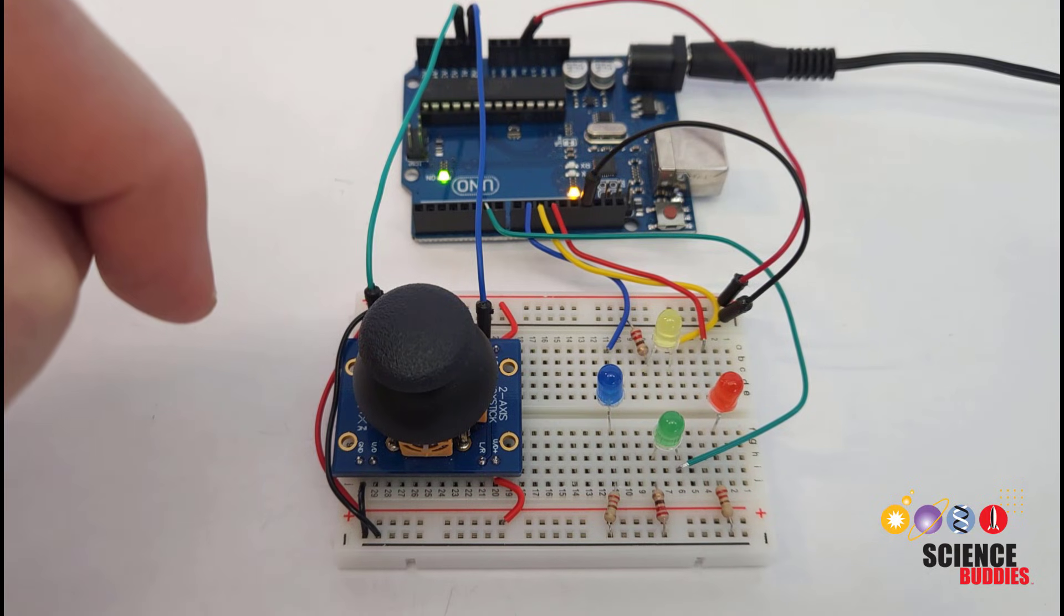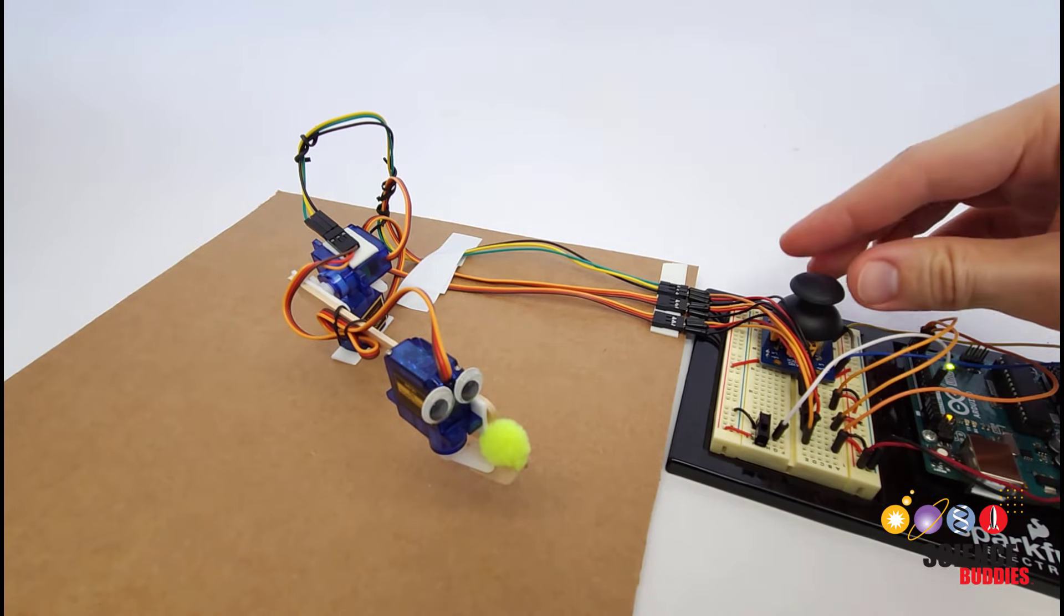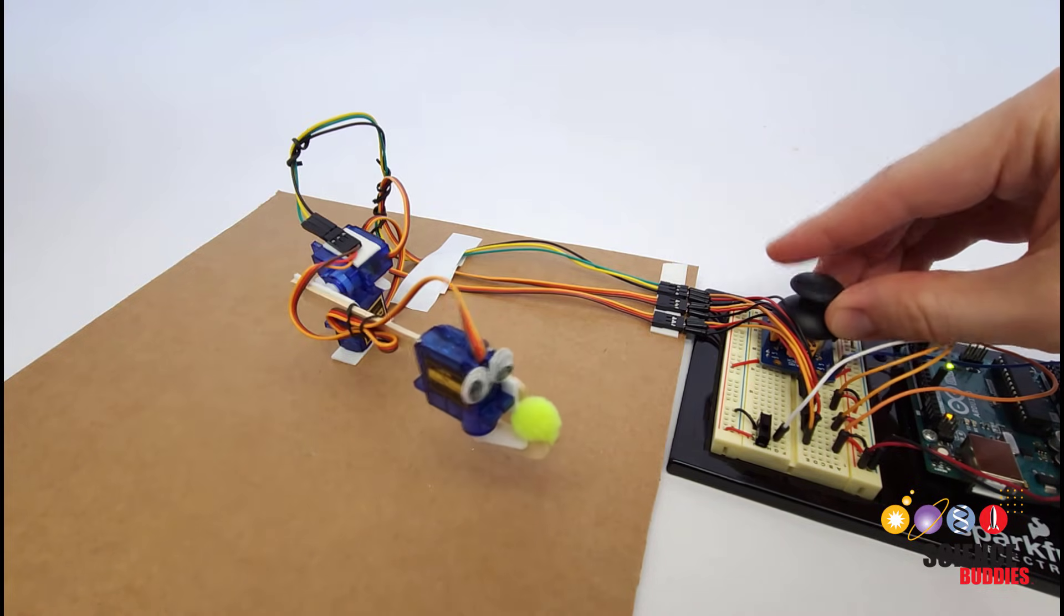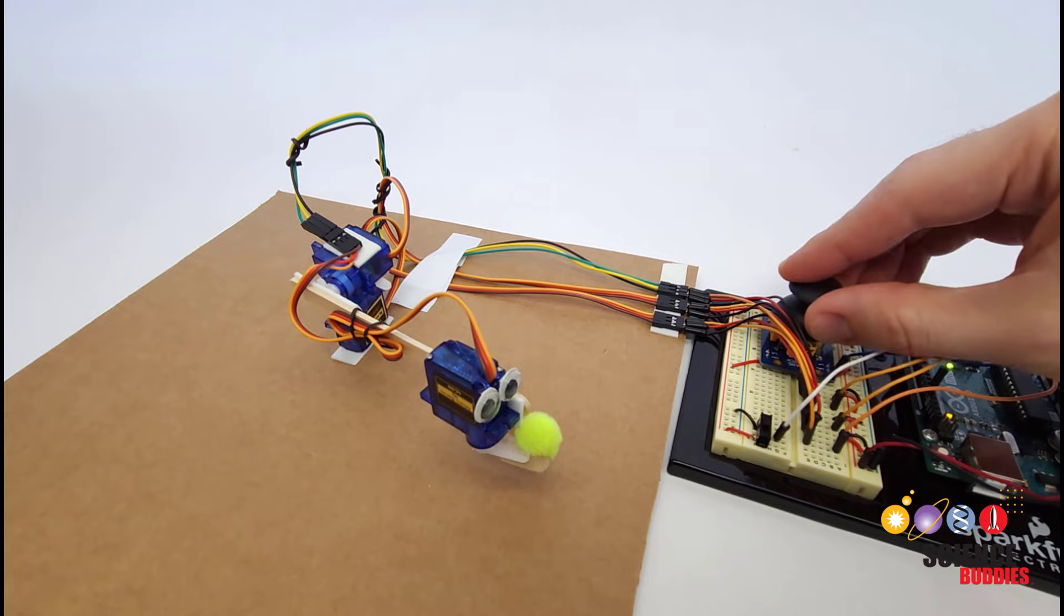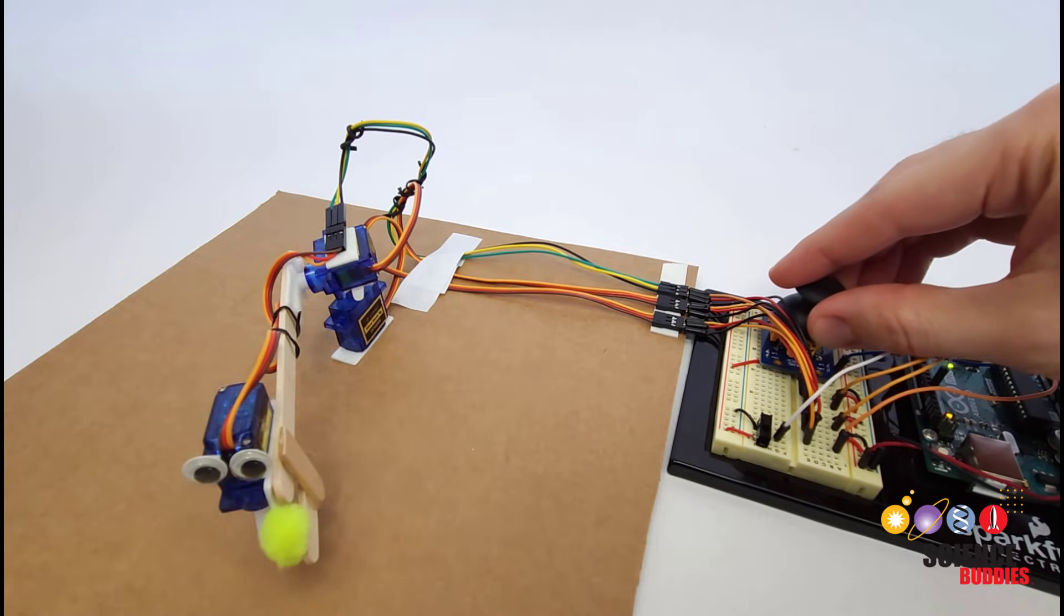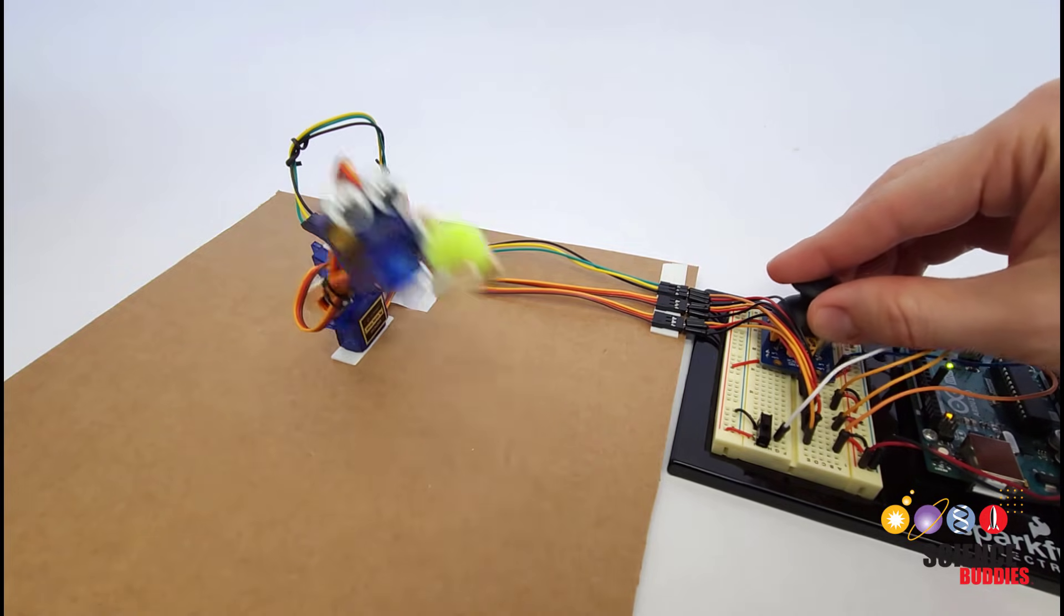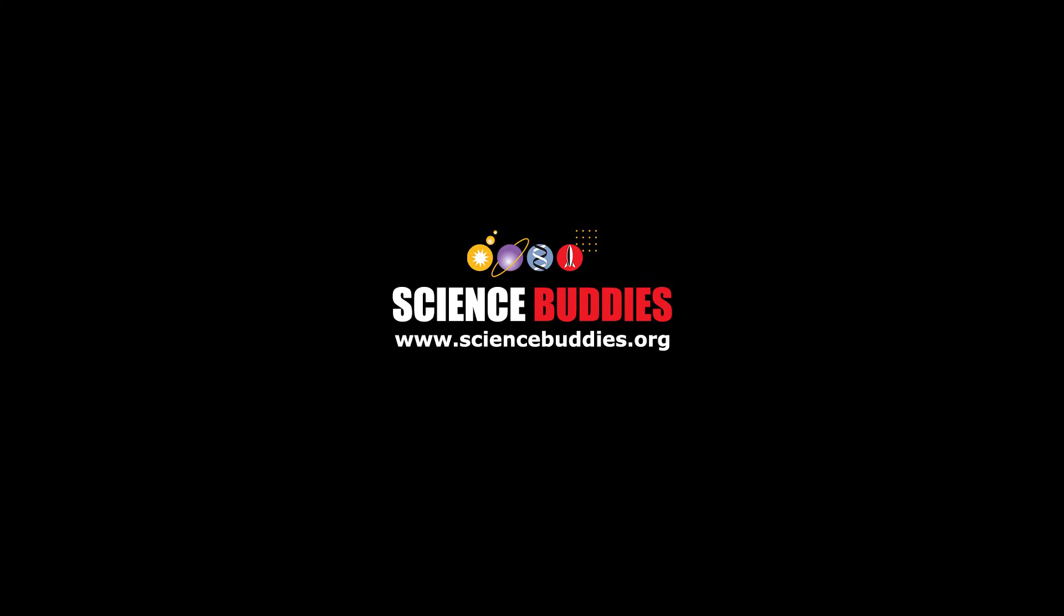You can use your joystick to control many other types of outputs for example as you saw at the beginning of the video you can use one to control a robotic arm. We have a separate video about that linked in the description of this one. Make sure you check out the rest of our Arduino tutorial series, our list of cool science projects you can do with an Arduino, and many other science fair resources available at our website www.sciencebuddies.org.